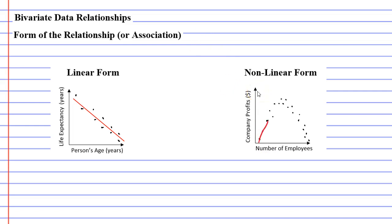And I'm just going to do a rough sketch of this one. So basically, whenever you're asked about the form of the relationship, if it's a straight line, you say it's a linear form. If it's not, you just say that it's a non-linear form.